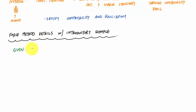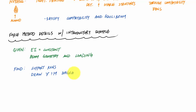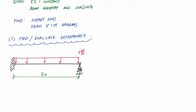Let's say we're given a structure with a constant flexural rigidity EI for the entire length of the beam. It's going to be statically indeterminate. What we want to do is find the support reactions and draw the shear and moment diagrams. There won't be any axial loading, so there won't be any internal axial load diagram. The first thing we want to do, as with any structures problem, is evaluate the determinacy.